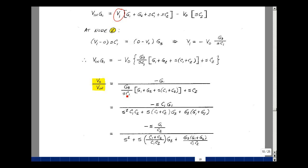That cancels with this term, so I get G3 times G1 plus G2. That's this term. And then I have G3 times the quantity C1 plus C2 times SC1. And lastly, multiplying SC1 times SC2, I get S squared C1 C2.